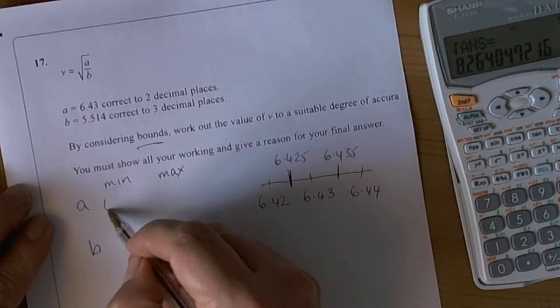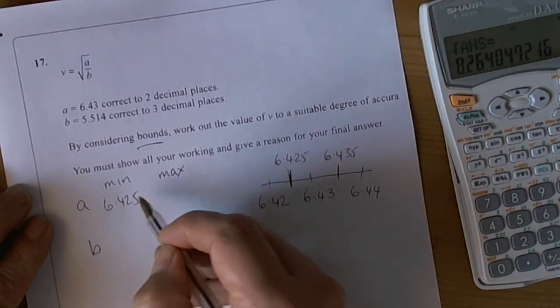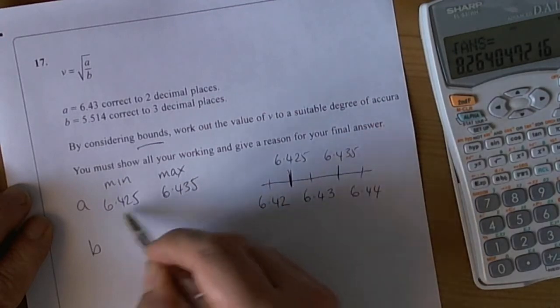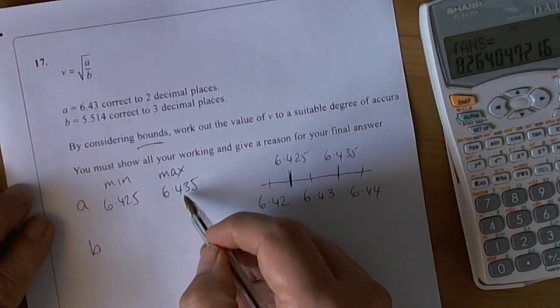So we'll get a mark just for writing down 6.425 and 6.435 to show we've understood what the minimum and maximum values possible were for the A.